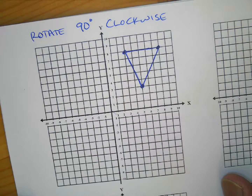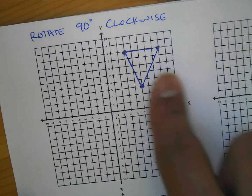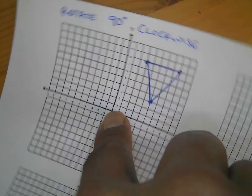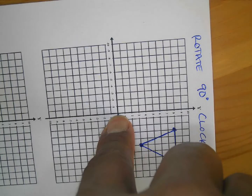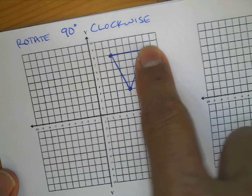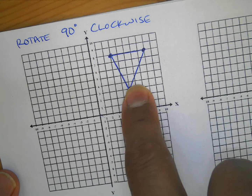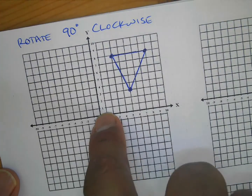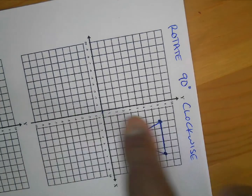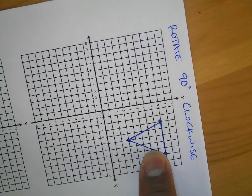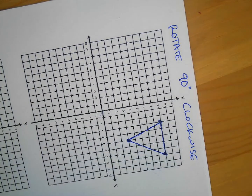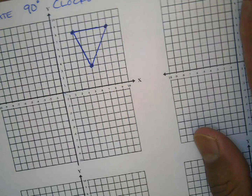It kind of looks like this, but when you rotate it it's not going to look like this anymore. It looks like an arrowhead pointing down, but when I rotate it 90 degrees it's down here now and pointing this way.